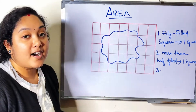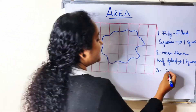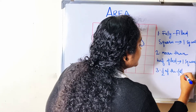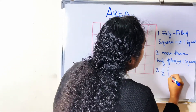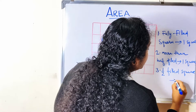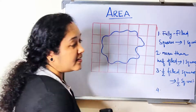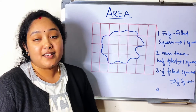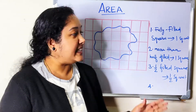Rule 3 — half filled squares are calculated as half a square unit. Rule 4 — ignore squares that are less than half filled. This convention gives a fair estimate of the desired area.